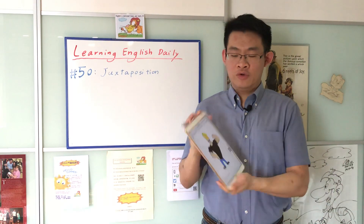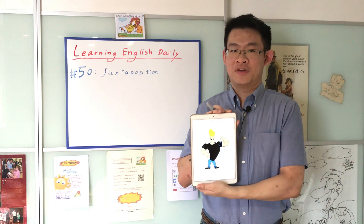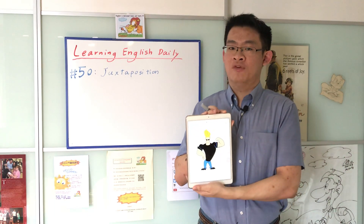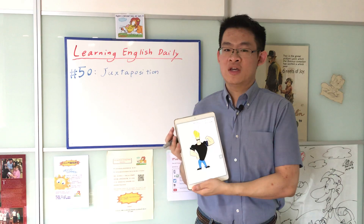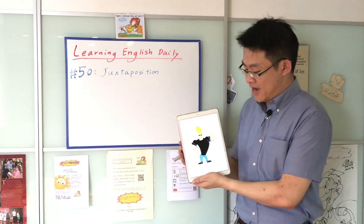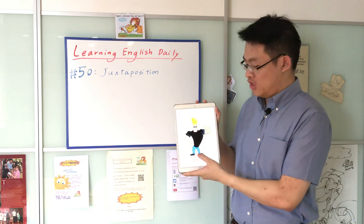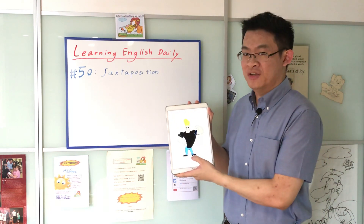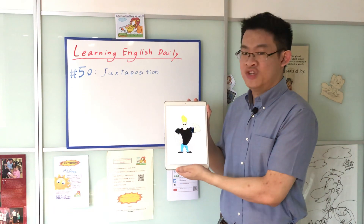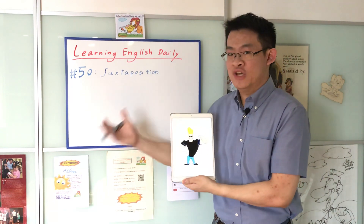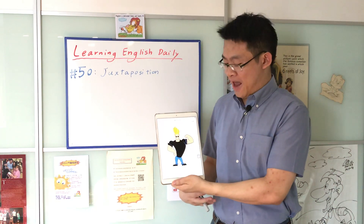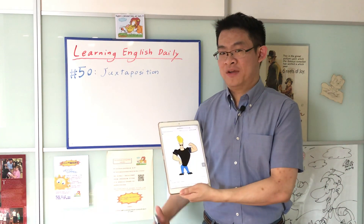For example, do you know who this character is? This is a guy called Johnny Bravo. As you can see, Johnny Bravo goes to the gym a lot and yet he is one of those guys who constantly skips leg day. That is why there is a tremendous juxtaposition between the upper part of his body and the lower part of his body.